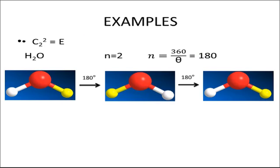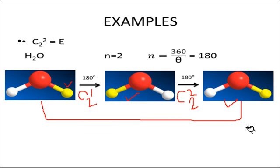These are the three structures you will get. Rotation through 180 degrees, that is C2 of 1, one operation, will give this type of structure. Considering the second operation, C2 of 2, will give this structure. That means both structures are identical and original. Hence it is proved that Cn of n equals E for H2O.